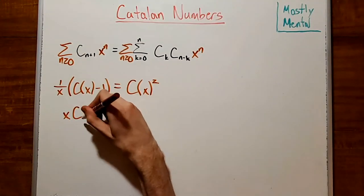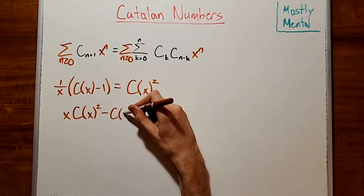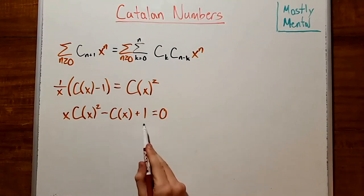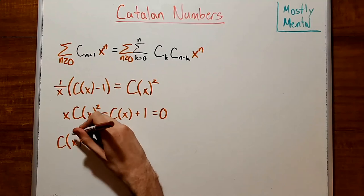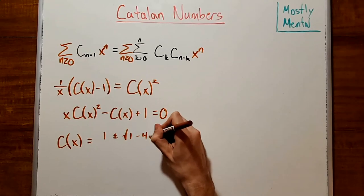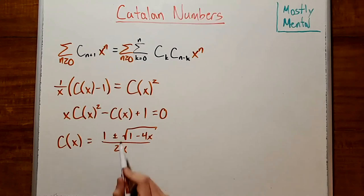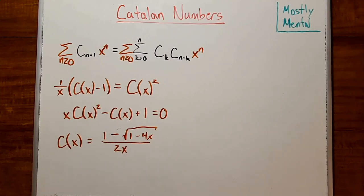Rearranging, we get x C of x squared minus C of x plus 1 equals 0. And this here is a quadratic equation, so we can plug it into the quadratic formula to get C of x equals 1 plus or minus the square root of 1 minus 4x all over 2x. Now the positive solution turns out not to work, it's a pole for all you analysis folks, so we'll only concern ourselves with the negative solution.